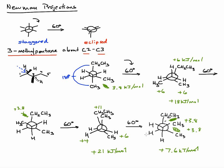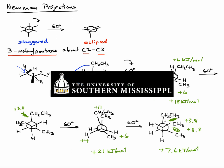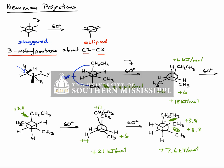This screencast has been a brief tutorial on how to draw a Newman projection — demonstrating how to convert from a name to a wedge-dash drawing, then converting that into the Newman projection, then doing 60-degree rotations and estimating the energy contribution required for each rotation.